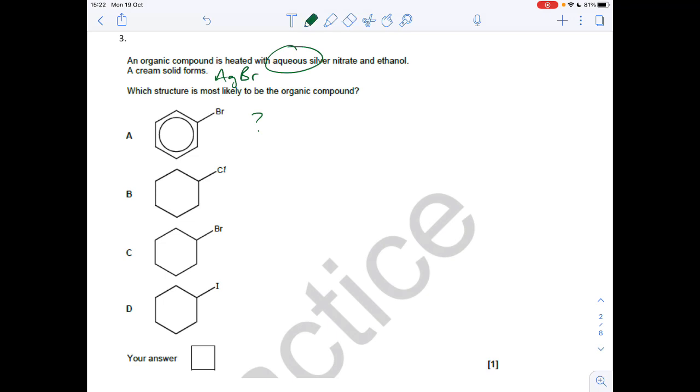So when it reacts with water, I'll just show you, we're going to get the Br substituting for an OH group, and we'll get HBr, which is essentially, this thing here is H plus and Br minus, and it's that that reacts with the silver ions from the silver nitrate to form AgBr. Okay, so the answer was C.